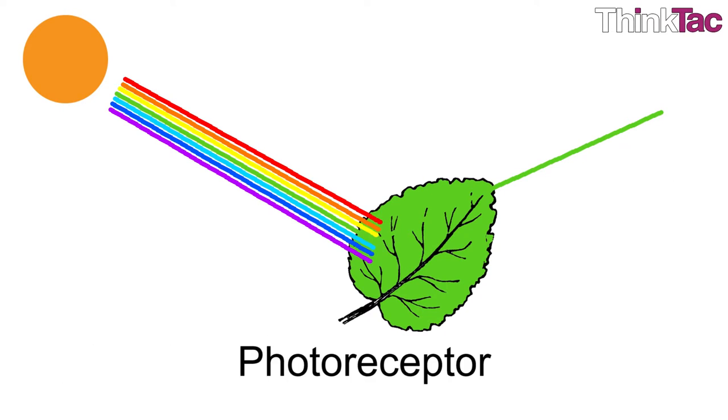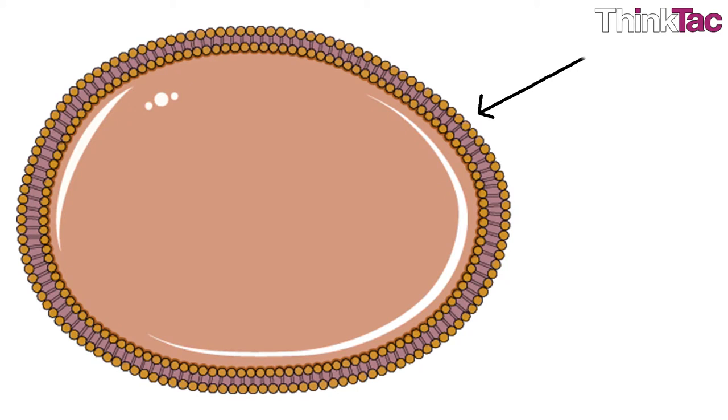Photoreceptors are a structure in living organisms that respond to light falling on them. A membrane is a pliable sheet-like structure acting as a boundary lining or partition in an organism.